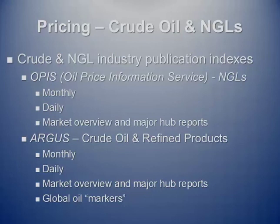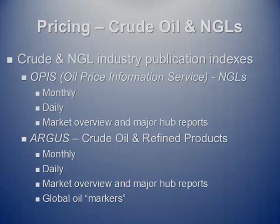For the crude oil and natural gas liquids industry, the most important publications come from two sources. One is OPIS — the Oil Price Information Service — which covers natural gas liquids, putting out monthly and daily negotiated pricing with a market overview, commentary, and prices at major NGL hubs around North America. The other is Argus, primarily known for crude oil and refined products pricing such as gasoline and jet fuel. Argus publishes monthly and daily pricing with major hub reports, and also provides prices for various global oil markers — not just WTI, Brent, and Dubai/Oman, but various other marker prices around the world.